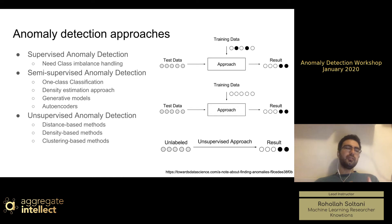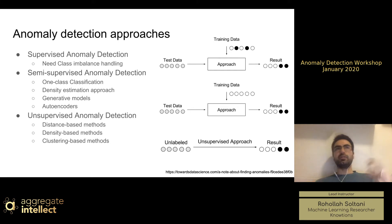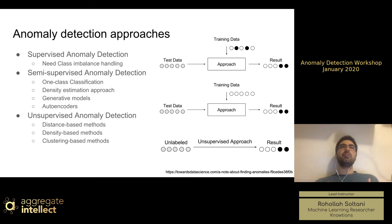One of the weaknesses of the supervised approach is that it requires lots of effort in labeling data. You need humans to go through the data and say, 'okay, that's an anomaly, that's an outlier.' In fraud detection, for example, there should be lots of people actually finding fraud and labeling data for you. The good thing about semi-supervised and unsupervised approaches is you don't need that much effort — you can just use the data as is.